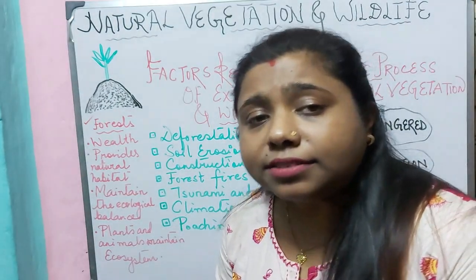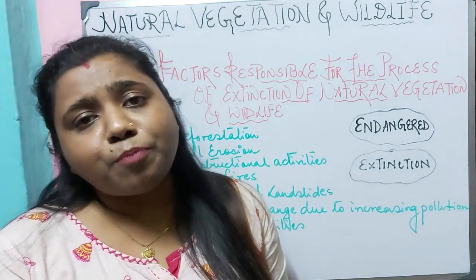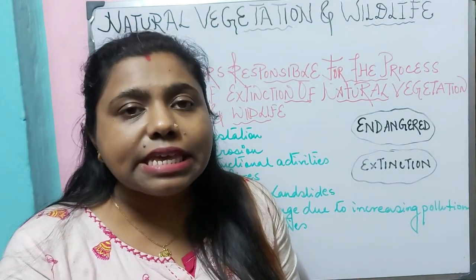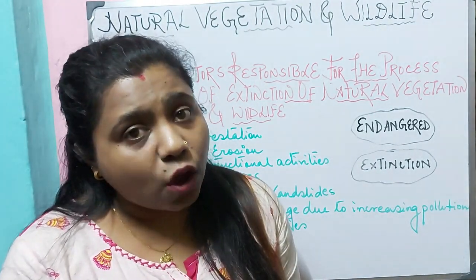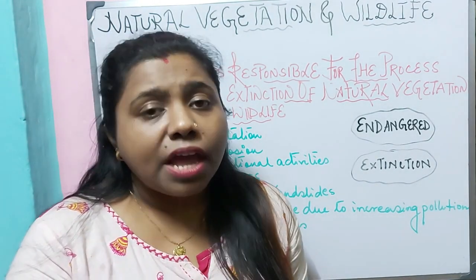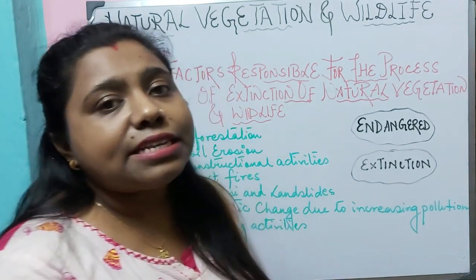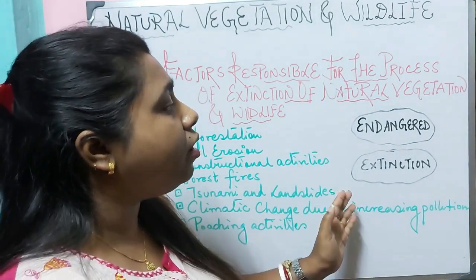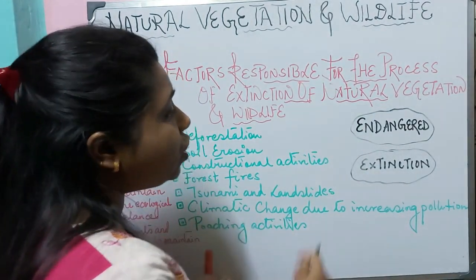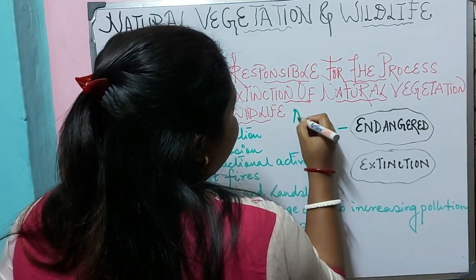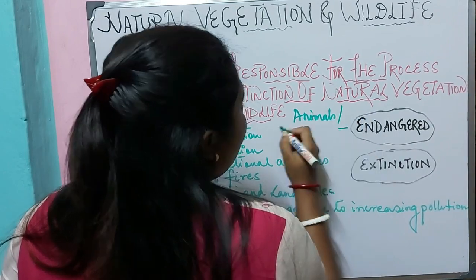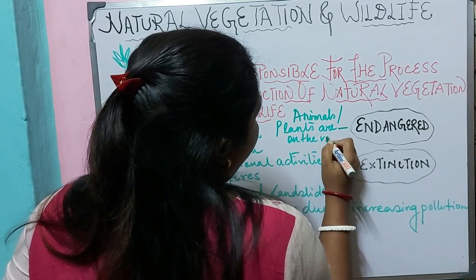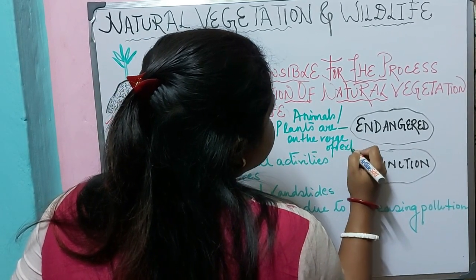Plants and animals together maintain the ecosystem and the ecological balance. Both are very important in maintaining ecological balance. However, we can see that there is a loss in the natural habitat and extinction of wildlife. Due to this loss of natural habitat, a large number of wildlife are becoming endangered. Endangered means the condition where animals or plants are on the verge of extinction.